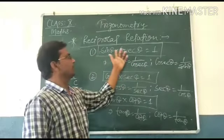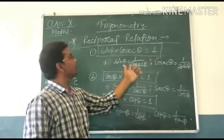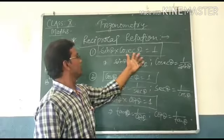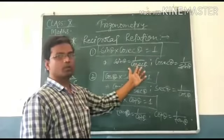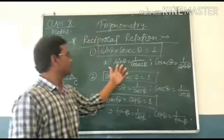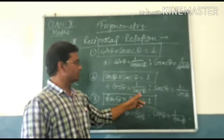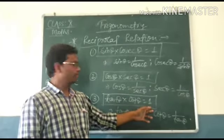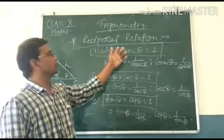First is sine theta into cosec theta equal to 1. That means sine theta equal to 1 by cosec theta and cosec theta equal to 1 by sine theta. Similarly, we can say that cos theta into sec theta equal to 1. That means cos theta equal to 1 by sec theta and sec theta equal to 1 by cos theta. Similarly, tan theta into cot theta equal to 1. That means tan theta equal to 1 by cot theta and cot theta equal to 1 by tan theta.